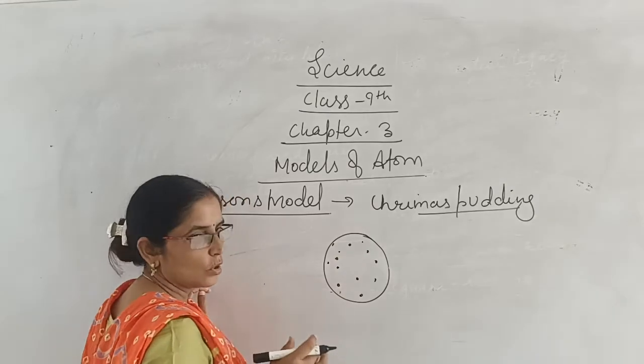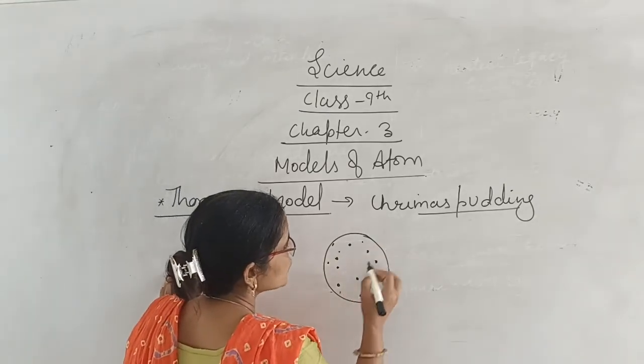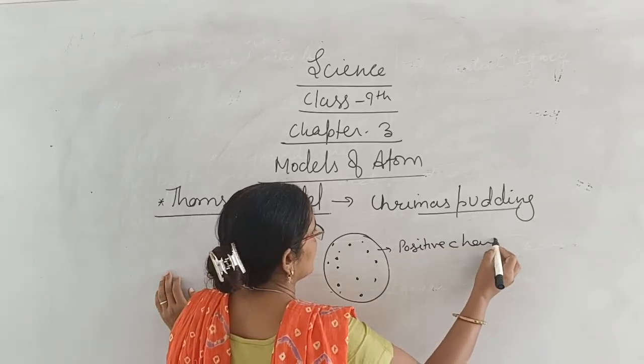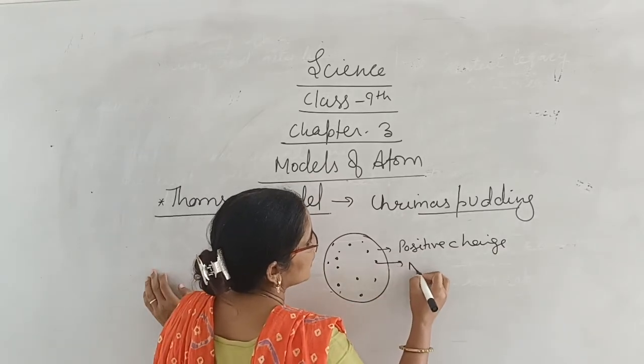So J.J. Thomson made this model like this. He states that the sphere is of positive charge, and the dry fruits denote electrons or negative charge.